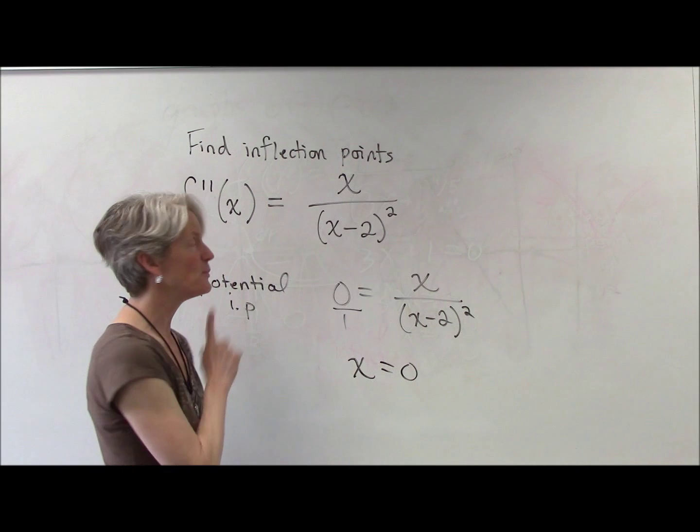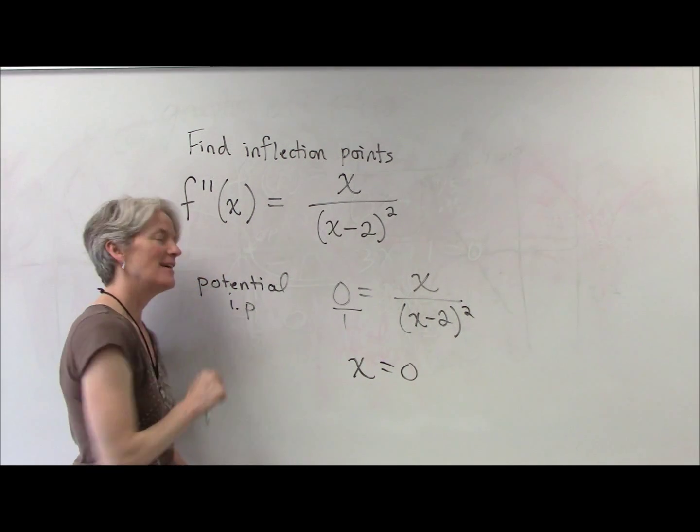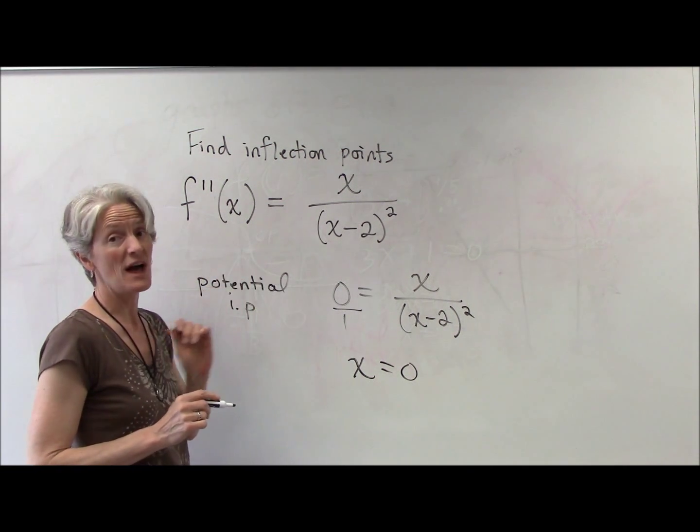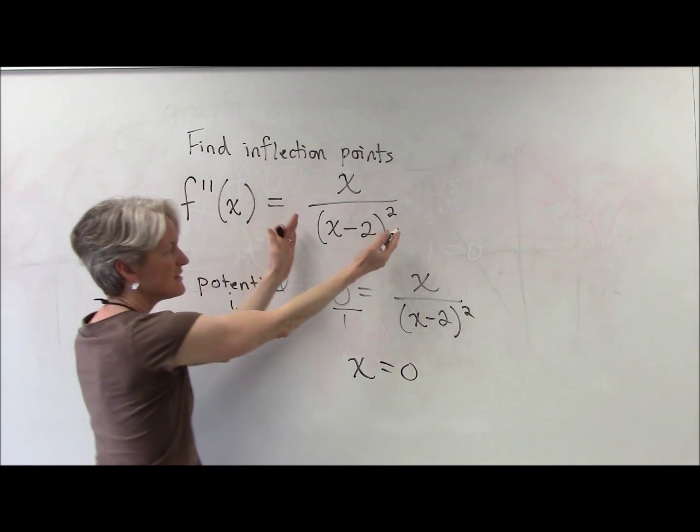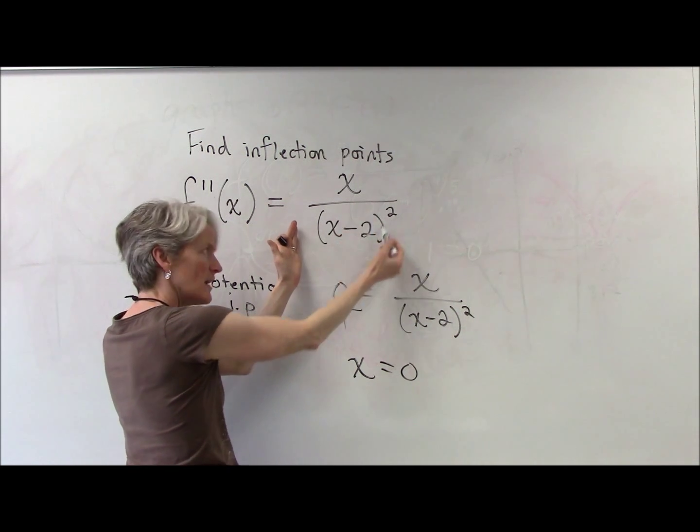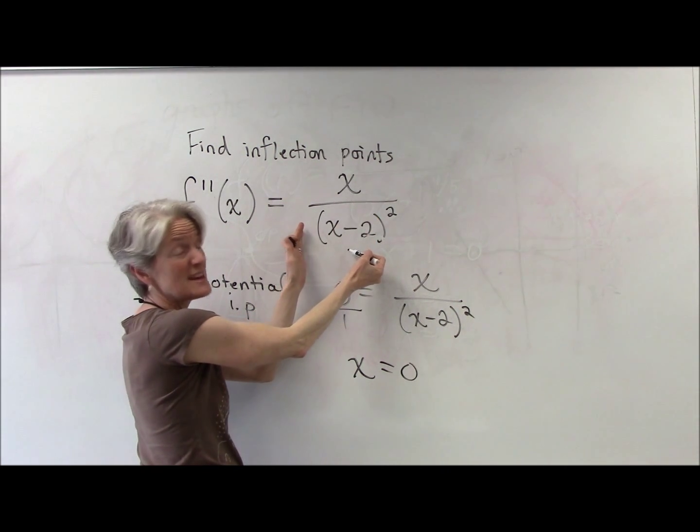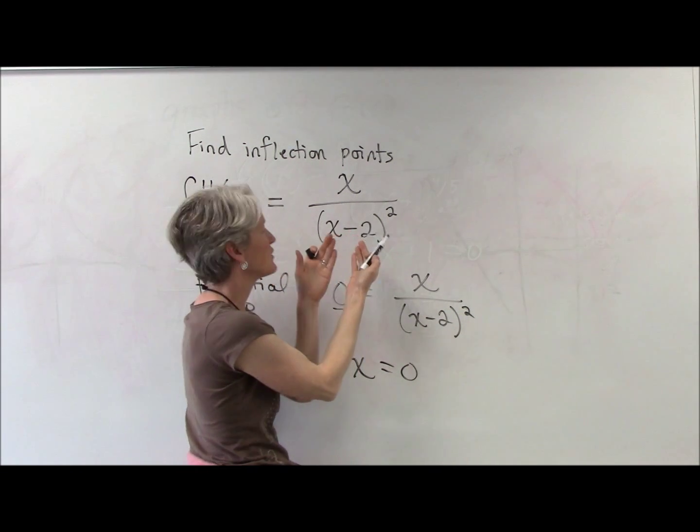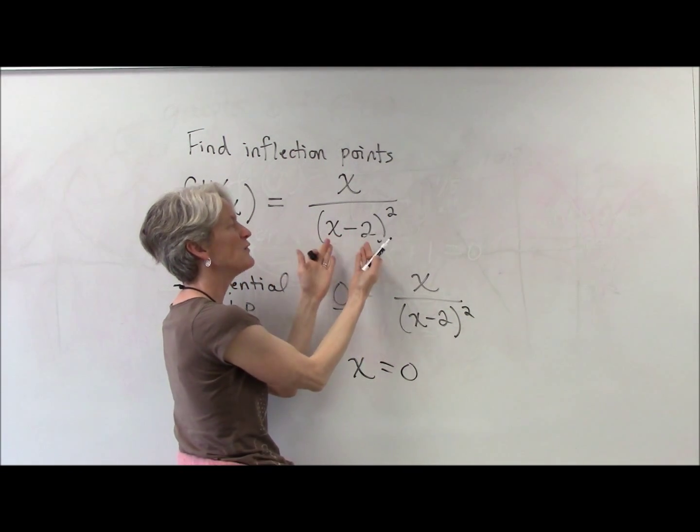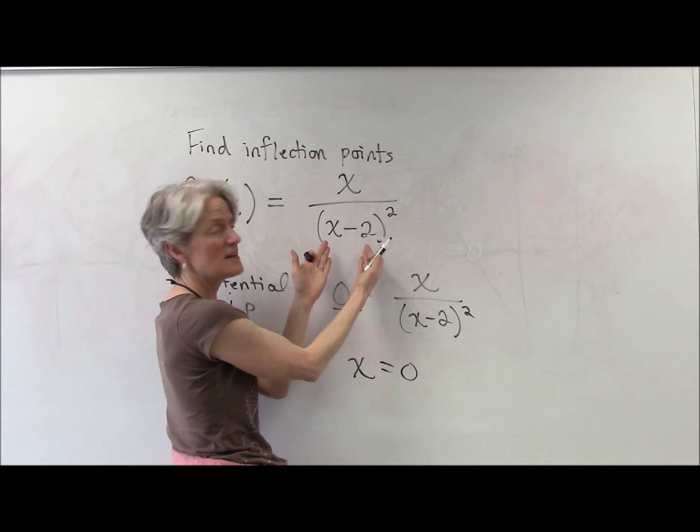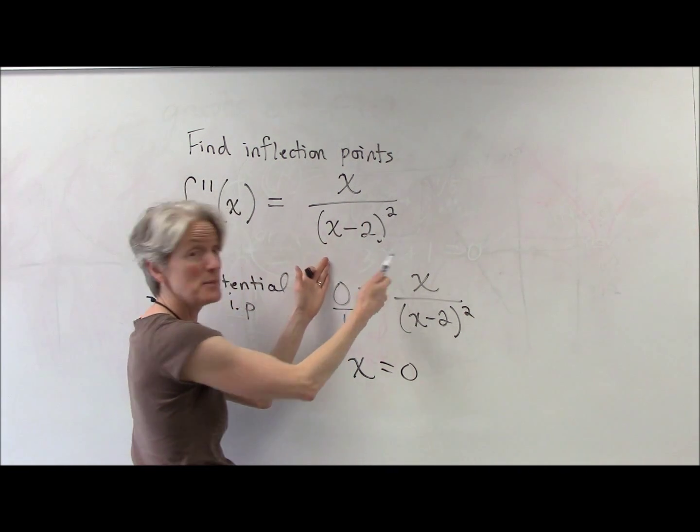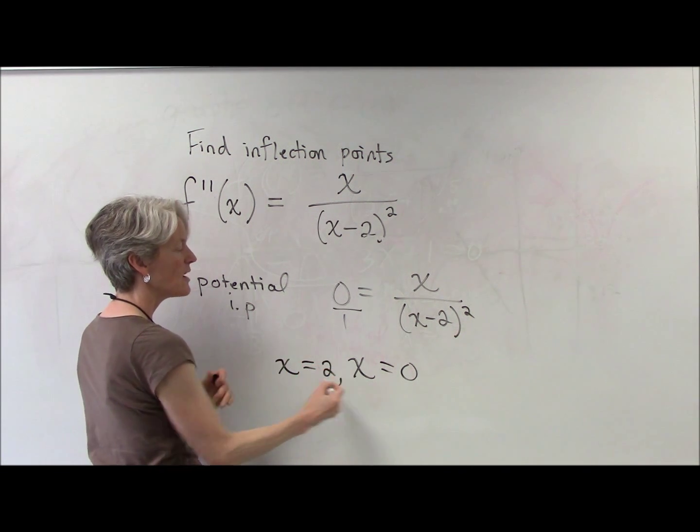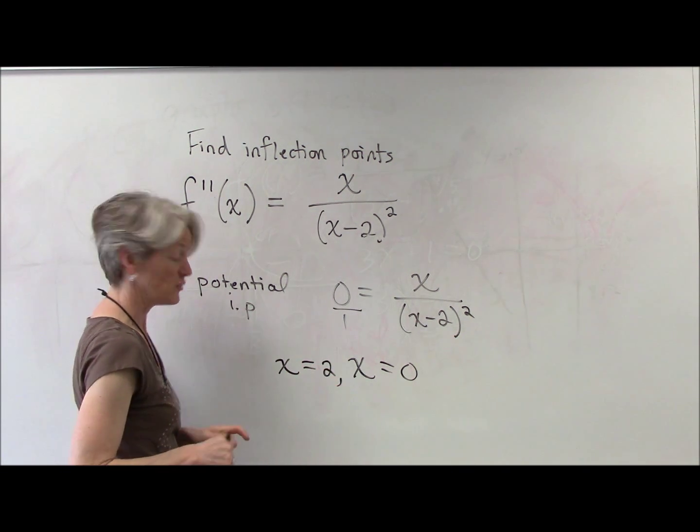But there's more, because potential inflection points happen when the second derivative is undefined. So we look at the denominator. This is going to be undefined when the denominator is zero. Again, I could do some algebra, but let's just look there. What x value would produce a zero in the denominator? That's going to be two. So two and zero are my potential inflection points.